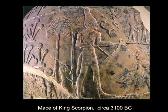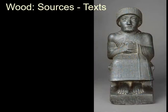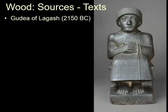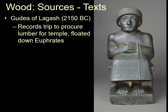And of course we have depictions of wood. Here is King Scorpion on his mace with a nice wooden hoe which he's going to break the earth with. So where people got their wood from is of course a big thing to most of the major civilizations in the Middle East. In Mesopotamia there was not a lot of wood, and so people like Gudea of Lagash records a trip to procure lumber for the temple, which they floated down the Euphrates.